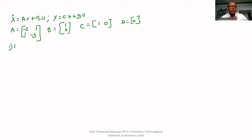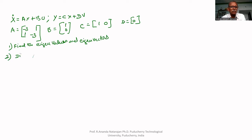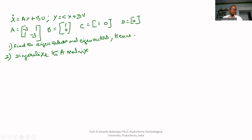The first step is to find the eigenvalues and eigenvectors. The second step is to diagonalize the A matrix. These are the two parts of this question. First, let us find the eigenvalues and eigenvectors.